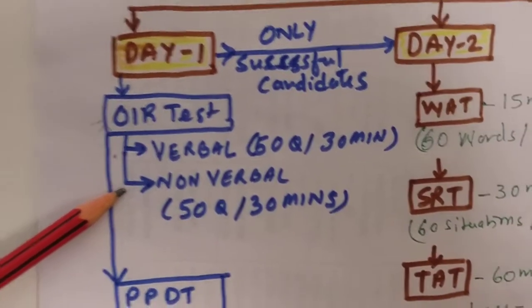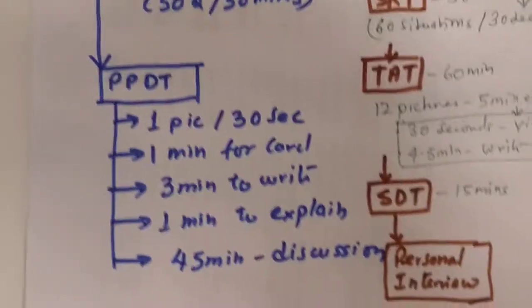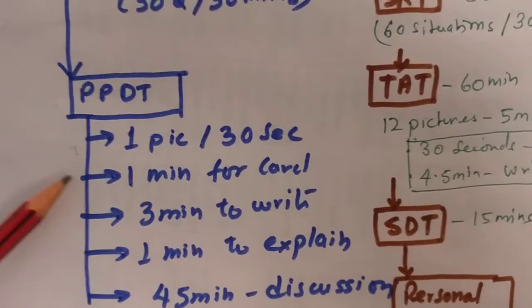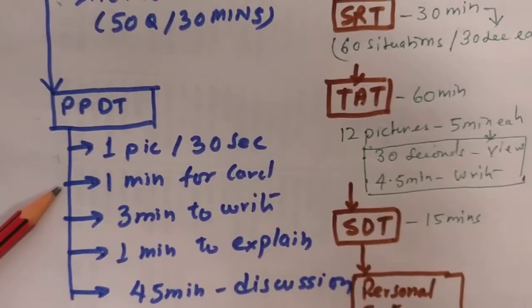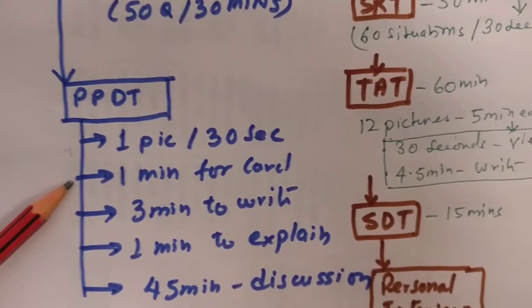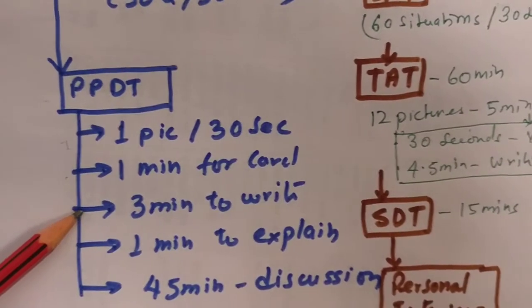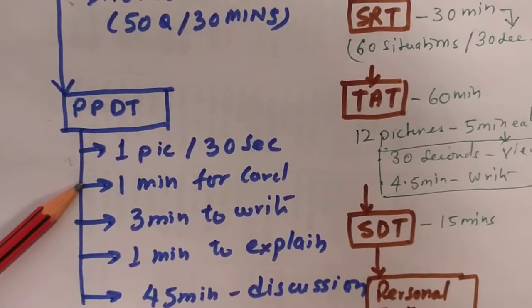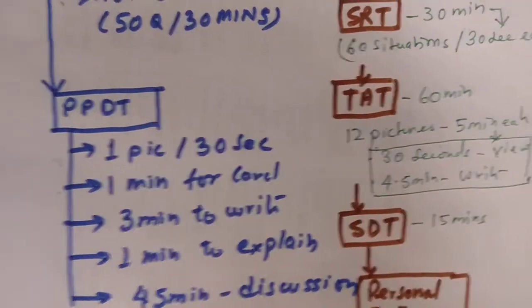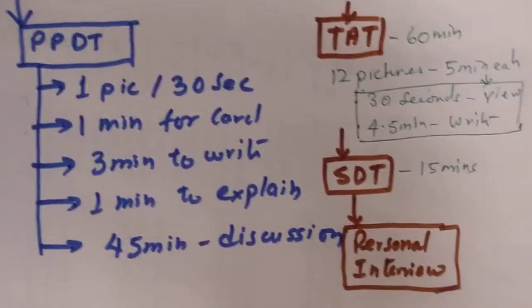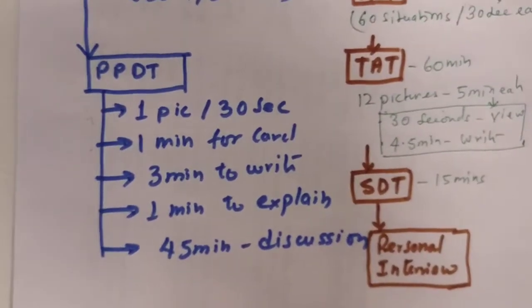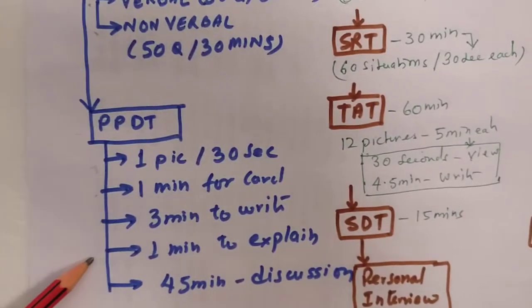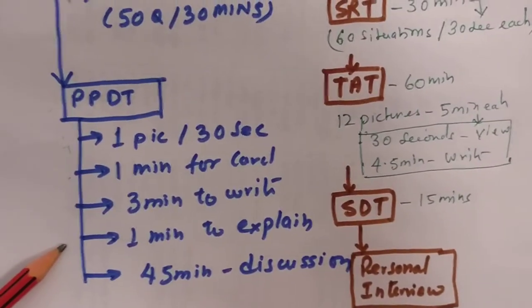Now coming to PPDT, one picture is shown for 30 seconds and one minute you get for filling up the card where you have to write the character's mood, etc. Then you get three minutes to write the story. You have to see this figure very carefully for 30 seconds and find out what all characters are there and how they are thinking. Then accordingly you have to write a good story. After stories are submitted, each candidate is required to explain their story for one minute.